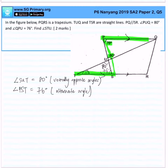And this allows us to finally find angle STU because we know that the sum of angles in a triangle is 180 degrees. Subtract from 80 degrees, subtract from 76 degrees. That will give me the angle of 24 degrees.